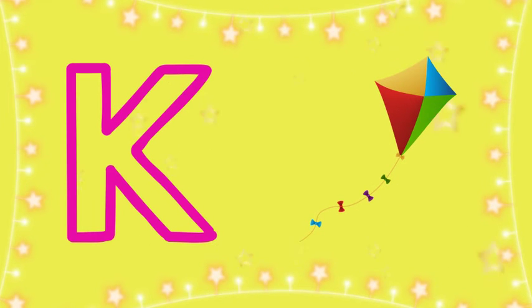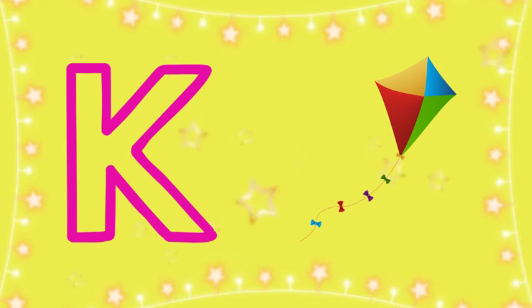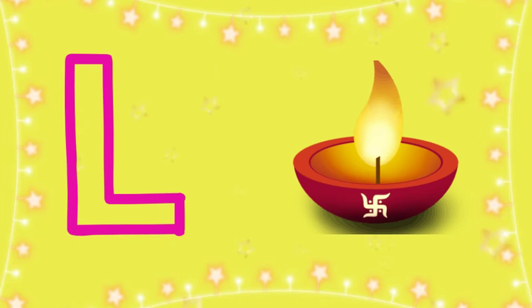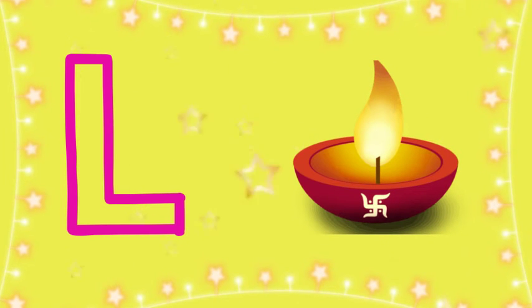K for Kite, Kite means Patang. L for Lamp, Lamp means Deepak.